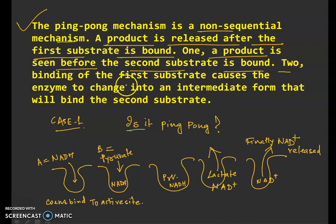The binding of the first substrate causes the enzyme to change into intermediate form due to conformational changes or maybe addition of any group that will bind to the second substrate.